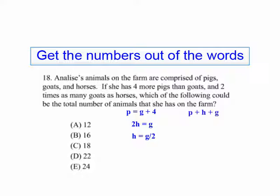Our total is going to be pigs plus horses plus goats. Now let's substitute the values in. We've got goats plus four for the pigs, goats divided by one half for the horses plus the goats. When we add that up, we get two and one half goats plus four.